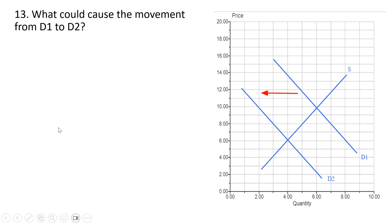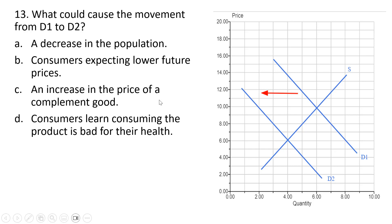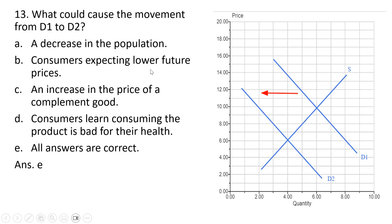What could cause the movement from D1 to D2? Here we're looking at a leftward shift of the demand curve, or decrease in demand. A decrease in the population — correct. Consumers expecting lower future prices — if you expect the price to be lower in the future, why buy as much today? So demand decreases today — correct. An increase in the price of a complement good — correct; if playing golf becomes more expensive, the demand for golf balls could decrease. Consumers learning the product is bad for their health — correct. So all answers are correct — answer choice E.